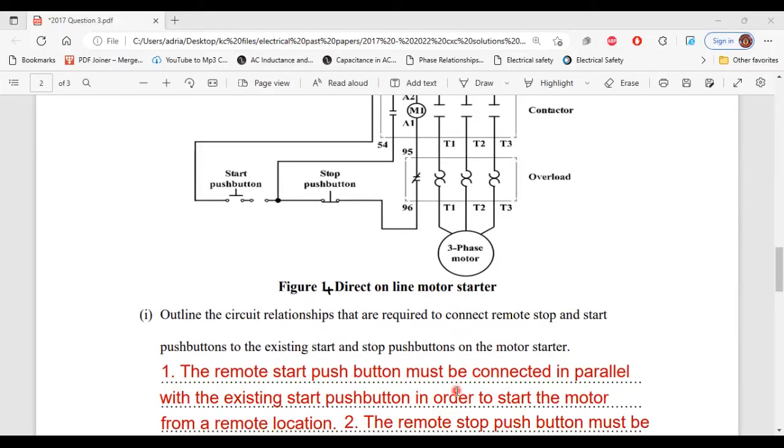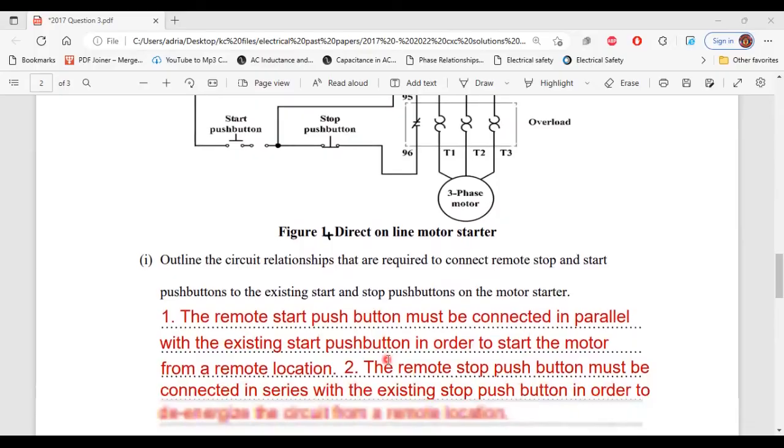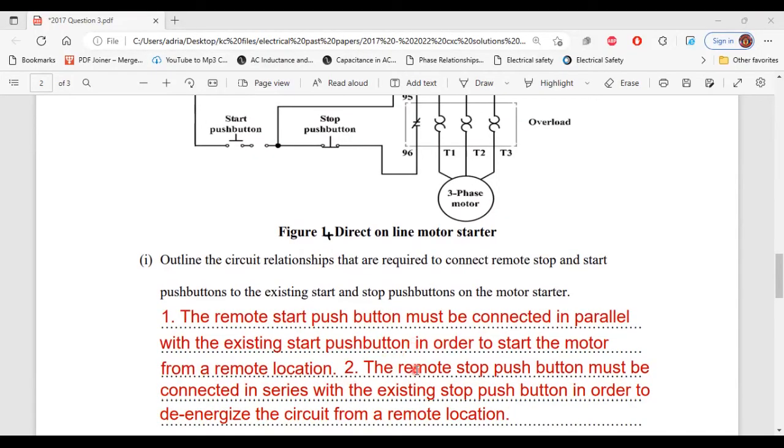For the remote start push button, you must connect it in parallel with the existing start push button to start the motor from a remote location. For the stop push button, it must be connected in parallel with the existing stop push button to de-energize the circuit from a remote location. That's what they're looking for. That's it for part one of C.